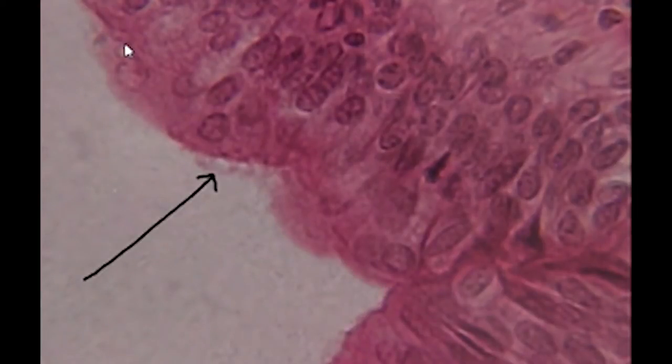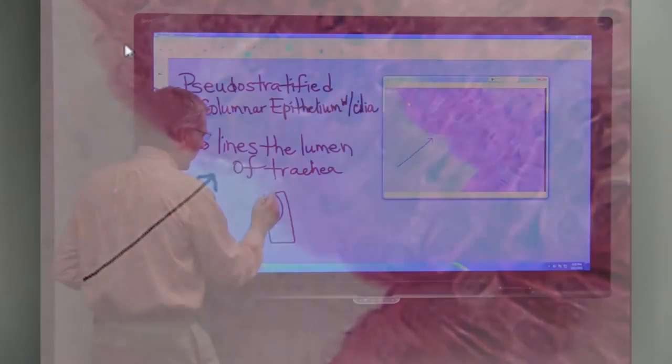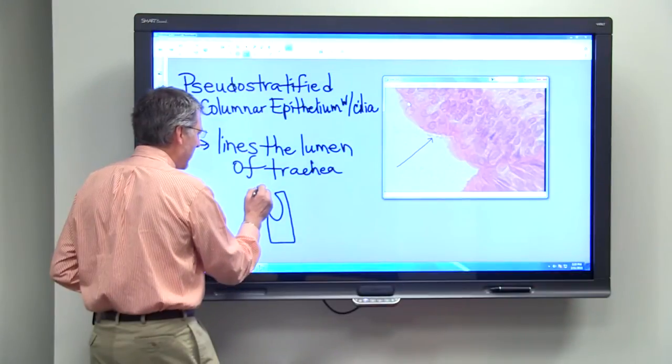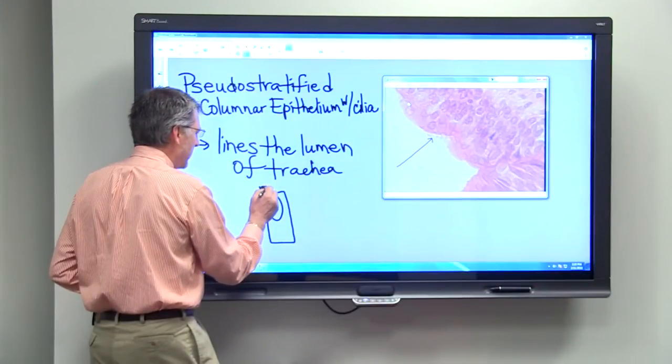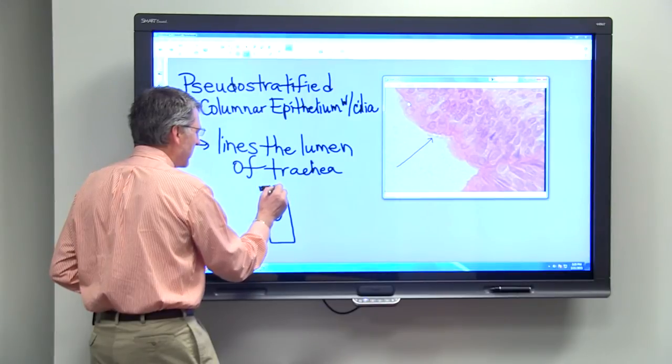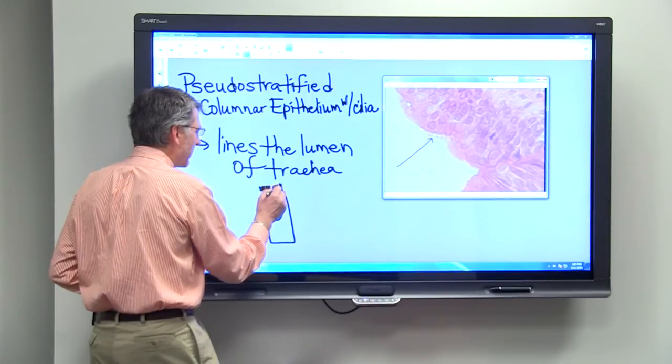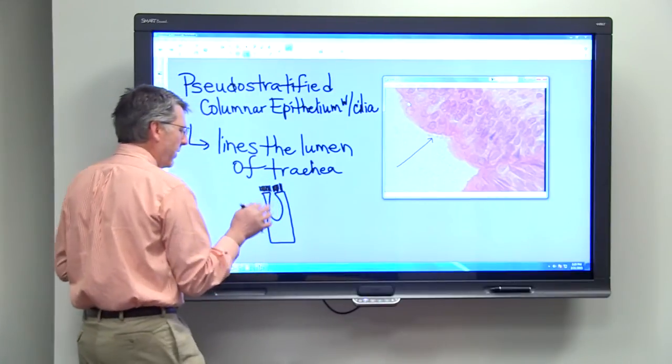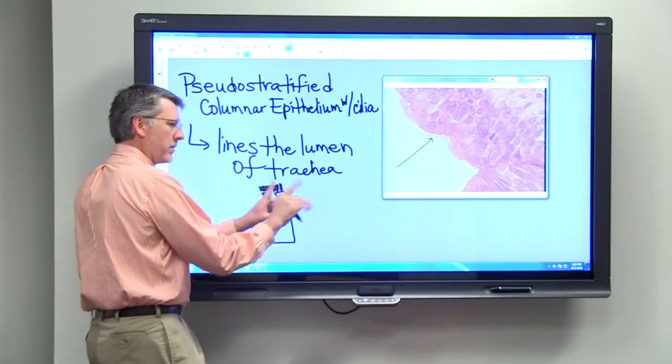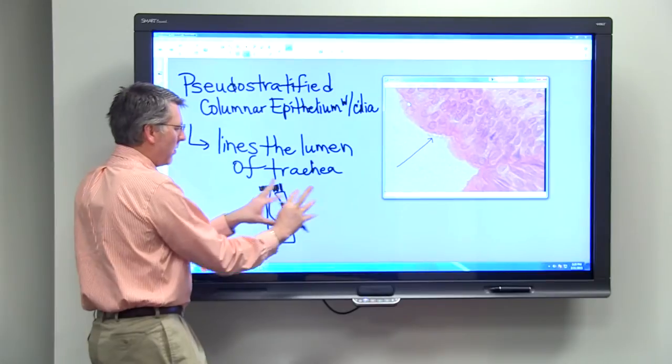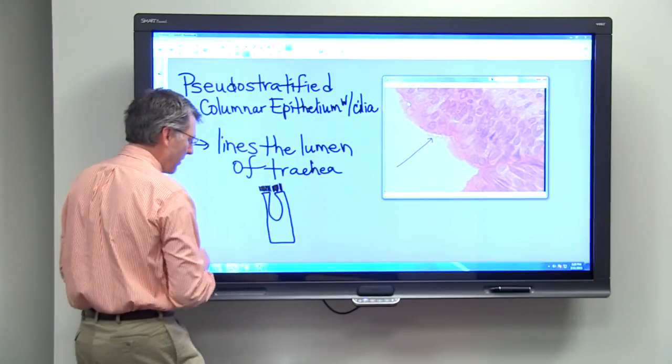Cilia are found on the free surface of these cells. They're just little—some people call them hair-like projections—but they're really short. What they do is, you can sort of picture them as fingers, and they wave back and forth.